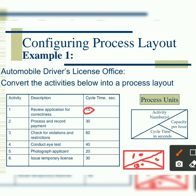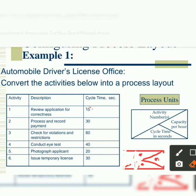Capacity is calculated as 1 over cycle time. For the first activity, capacity = 1/15 × 3600, because the cycle time was given in seconds. Were it given in minutes, you would multiply by 60. Whatever you get, you write it in that section. You do the same thing for all the activities, and at the end you will have six different boxes linked in a line.